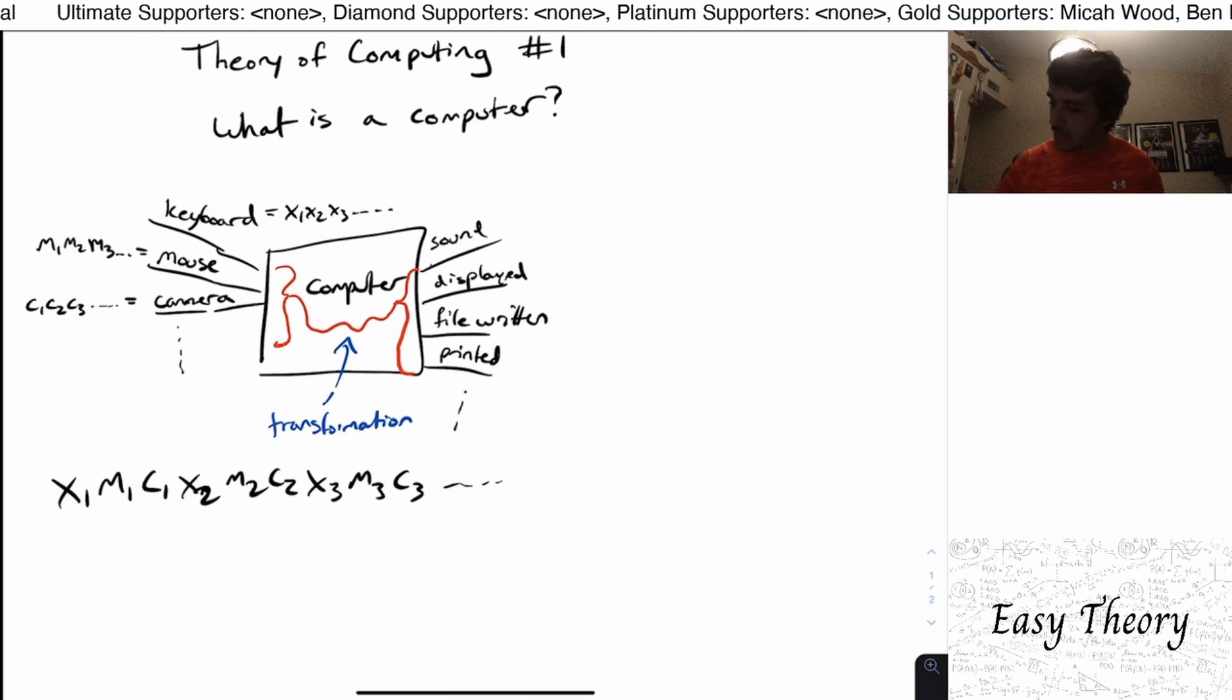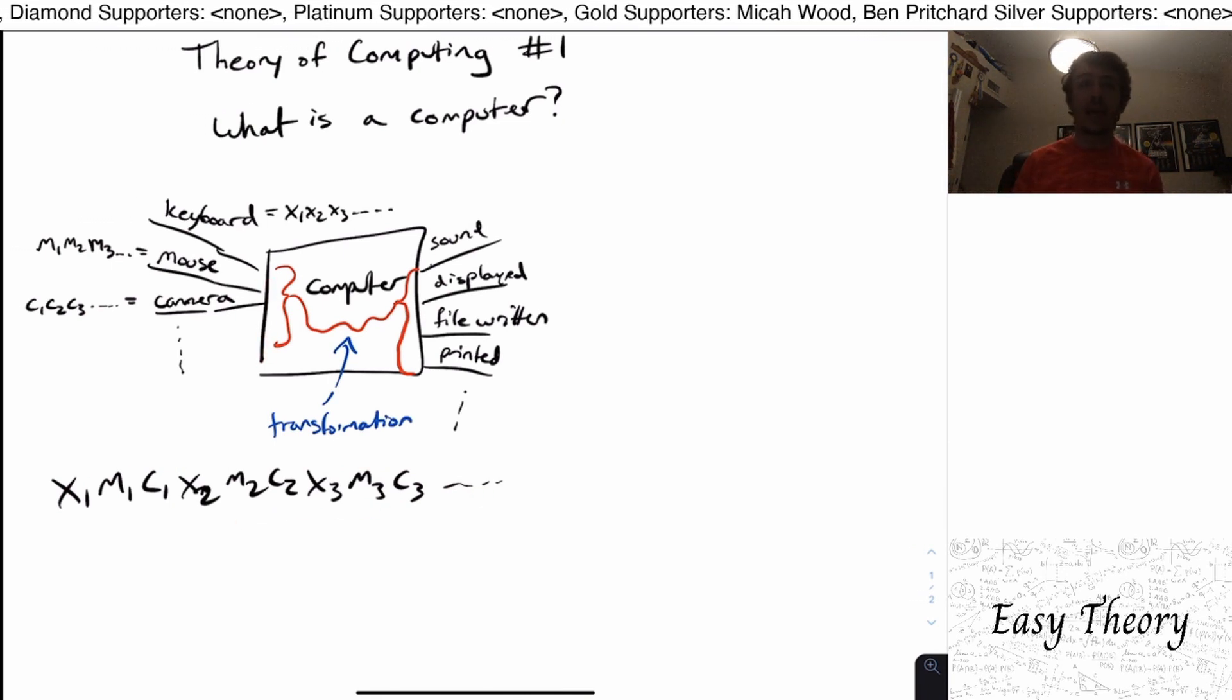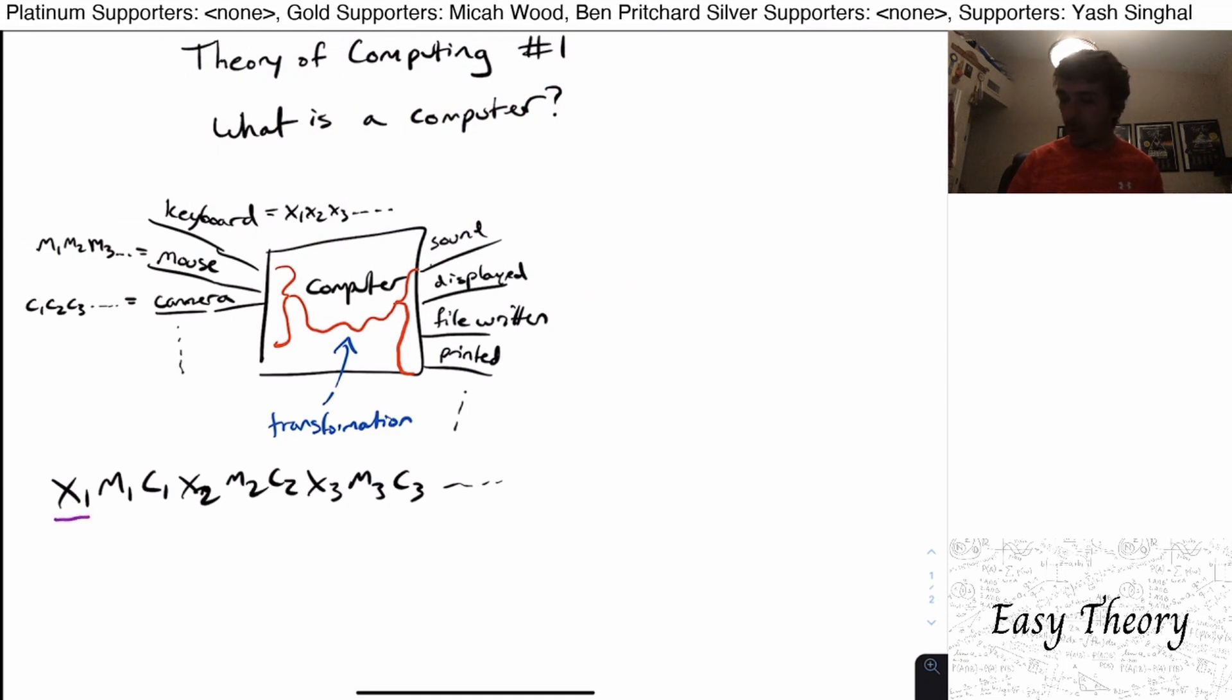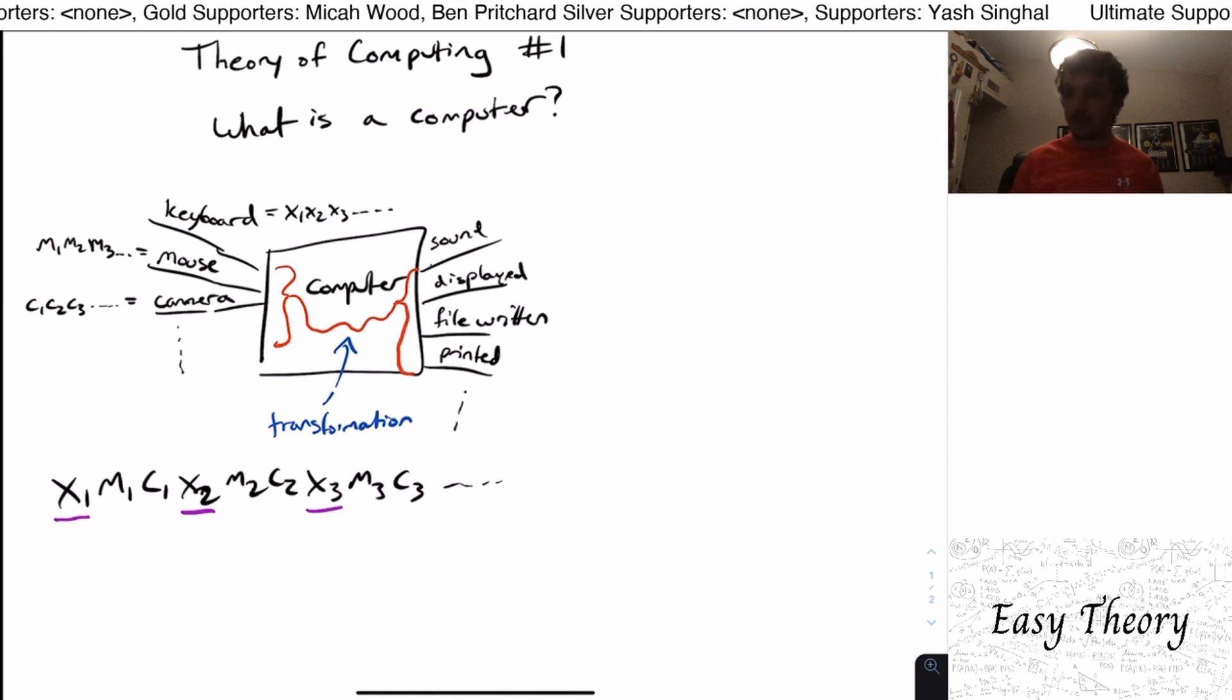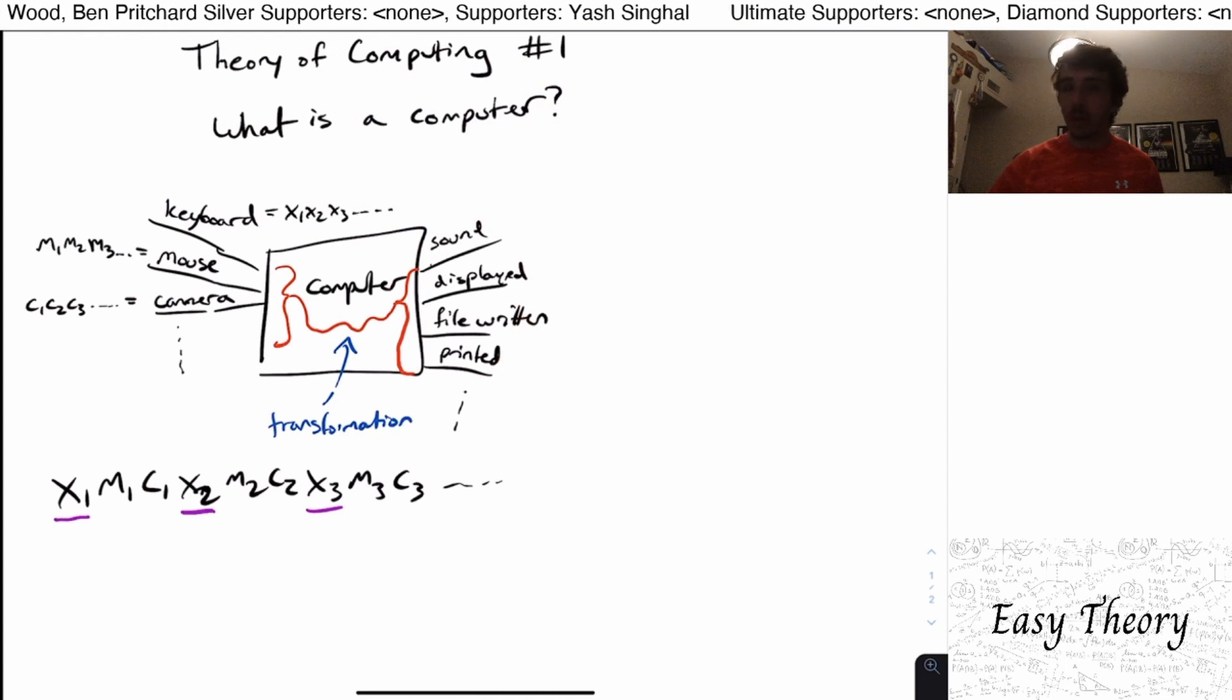So if we instead feed this particular string into the computer as input, as a single input, then to recreate what the original computer did, all we need to do is to extract the appropriate bits. To say, okay, if I wanted the bits of the keyboard, I'd just get the first bit, then the fourth, and the seventh, and every third bit along the way. And we can do the exact same process with the outputs. We can interlace them in exactly the same way.